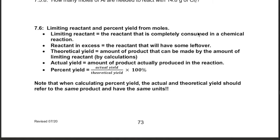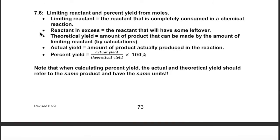Let's take a look at limiting reactant and percent yield. Both of these concepts use the stoichiometry from the previous section, where we had one starting material and calculated the grams of product formed. In limiting reactant problems you have two different starting materials and figure out which one limits the amount of product. In a percent yield problem you are given an actual yield and use the calculated theoretical yield to figure out what percent you got from what you expected.